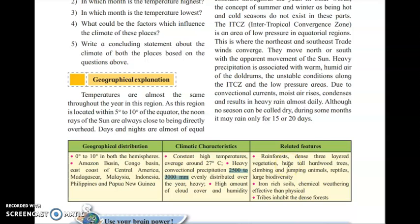Heavy precipitation — in the form of rainfall of about 2500 to 3000 mm — is evenly distributed every year. The land is covered with dense forest containing different types of trees: creepers, grasses, tall hardwood trees, and short scrubs. There is a large amount of biodiversity — animals, reptiles, and many species. The soil in the equatorial rainforest is iron-rich, and chemical weathering is dominant. Tribes inhabit the dense forests.